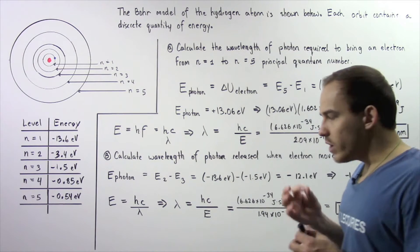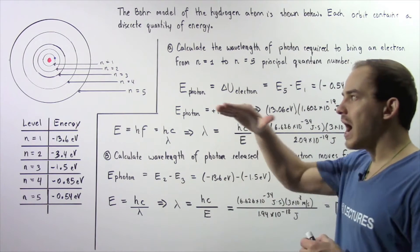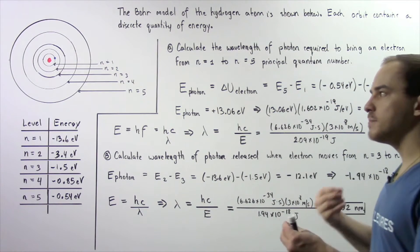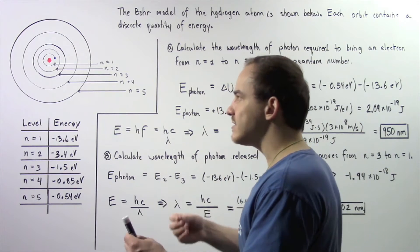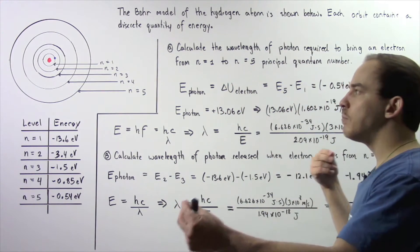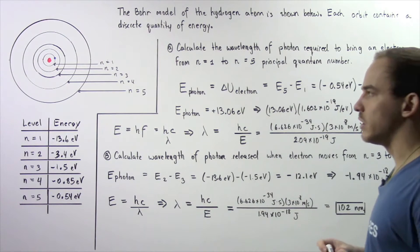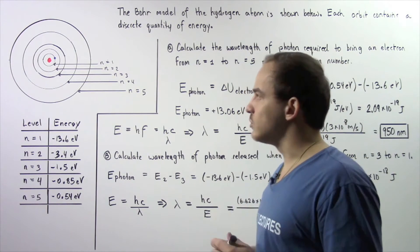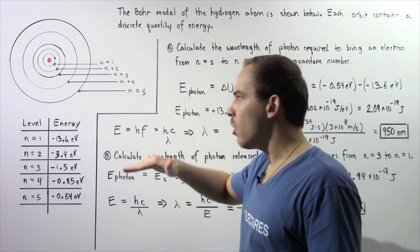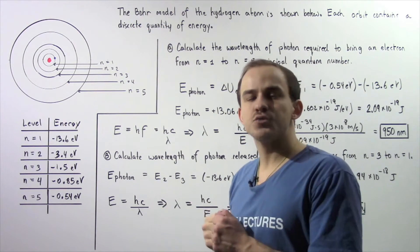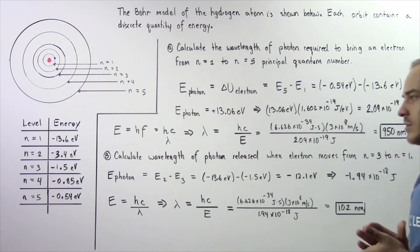Whenever an electron moves from a lower orbit to a higher orbit, energy must be inputted into that electron. Work must be done against electric forces that pull the electron to the proton found in the nucleus. On the other hand, when an electron moves from a higher orbit to a lower orbit, energy is released from that electron in the form of a photon.